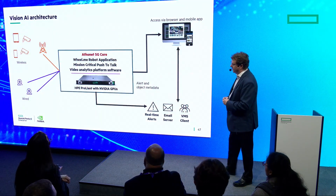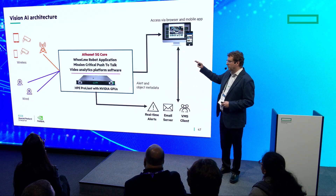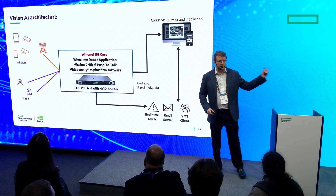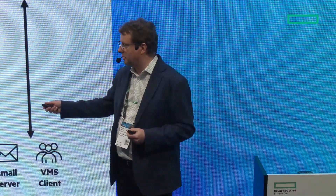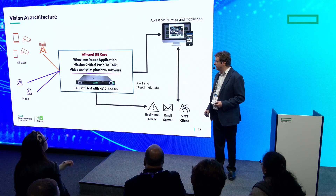Now let me talk about the architecture. We have a server in the middle that runs an Ethernet private 5G core, controlling a private network. You're now able to have a network — like Telefonica, AT&T, or Vodafone — dedicated to your private enterprise. It runs on an HPE ProLiant server. The WheelMe robot I'll show at the booth is controlled by the private 5G network. There's also a mission-critical push-to-talk application running on the same server, plus video analytics.